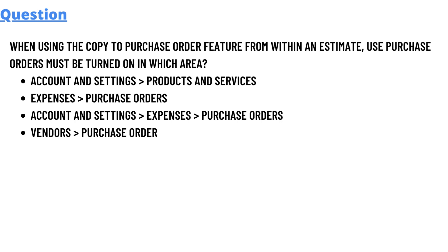We have some options here. Option A: Account and Settings, Product and Service. Option B: Expenses, Purchase Order. Option C: Account and Settings, then go to Expense, then Purchase Order. Option D: Vendors, Purchase Order.